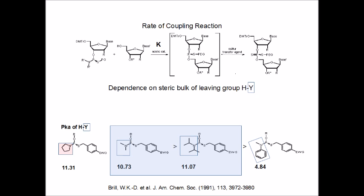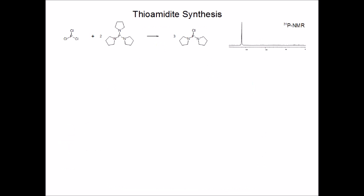Consequently, the least bulky and most basic functionality, the pyrrolidine, results in the highest coupling rates. When one wants to obtain thioamidites, one has to consider their enhanced sensitivity to oxygen and to the fact that they cannot be chromatographed. Thus, a methodology must be devised to give them in a form pure enough to be used in the oligonucleotide synthesis.